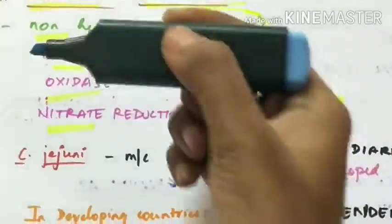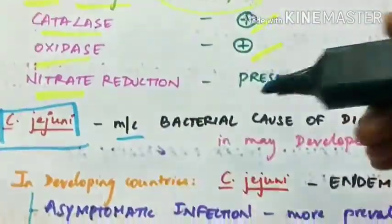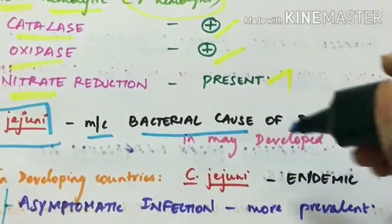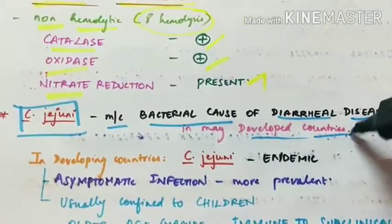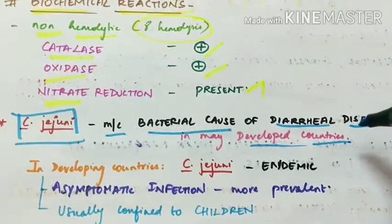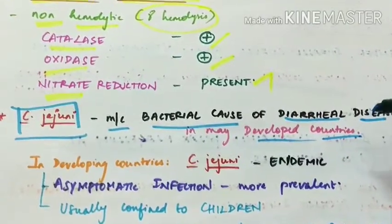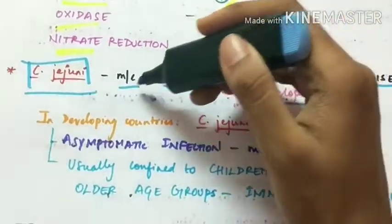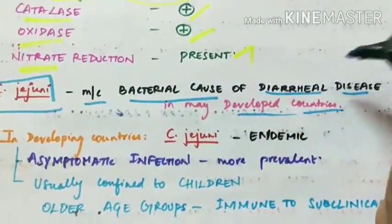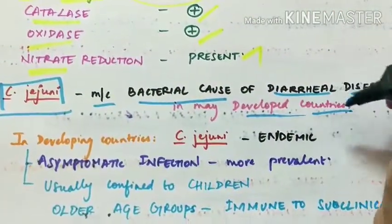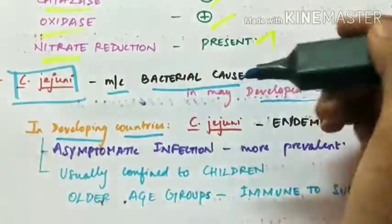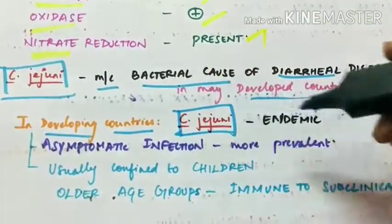Campylobacter jejuni is the most common bacterial cause of diarrheal disease in many developed countries, being more common even than Shigella or Salmonella. In developing countries, Campylobacter jejuni is endemic.